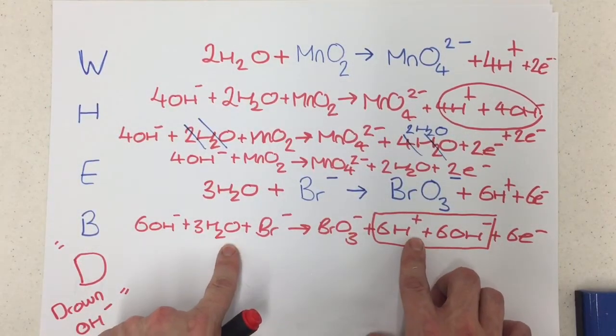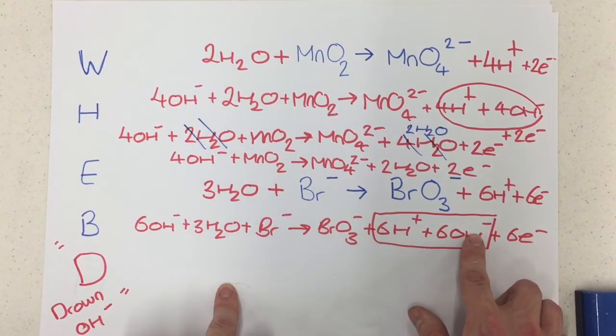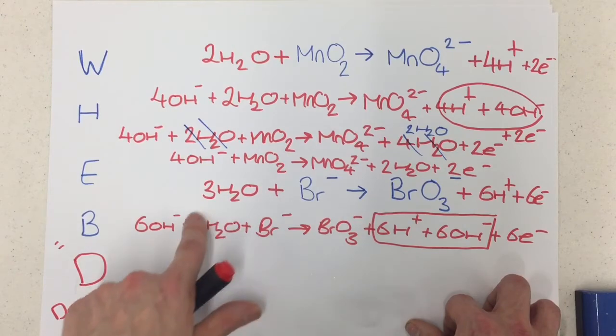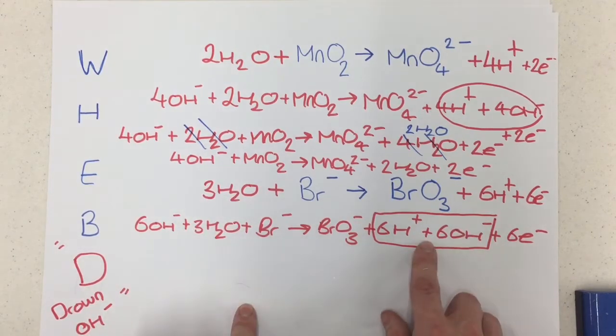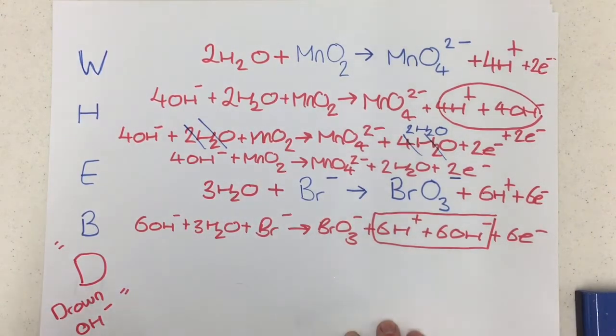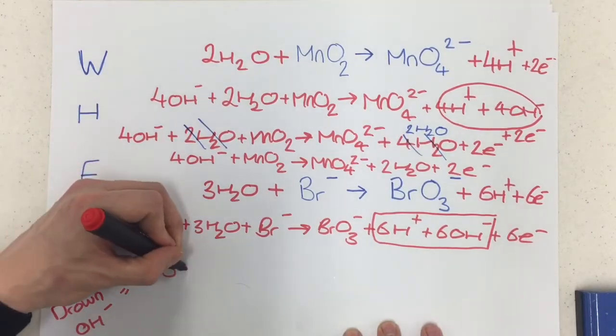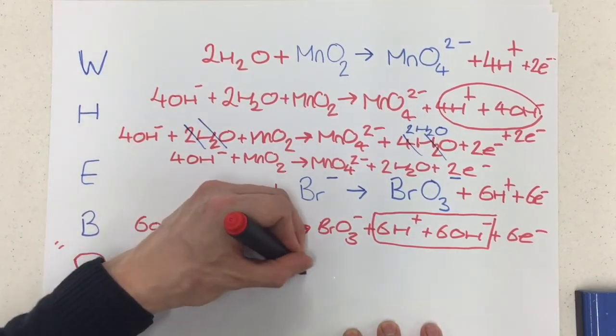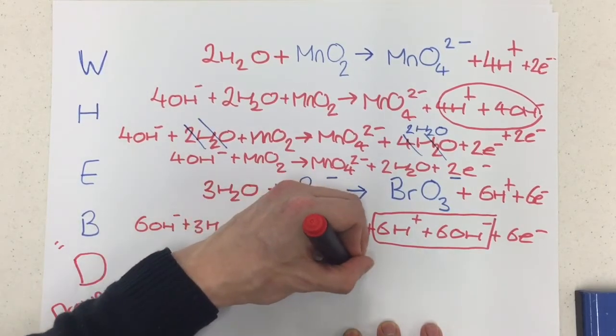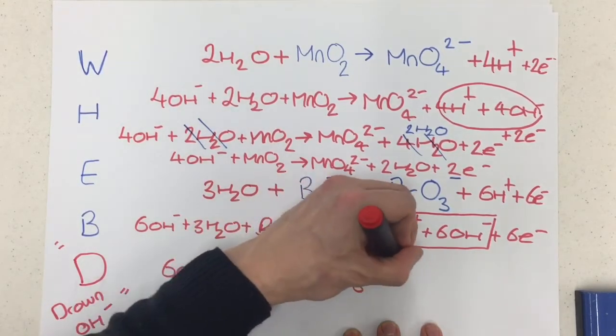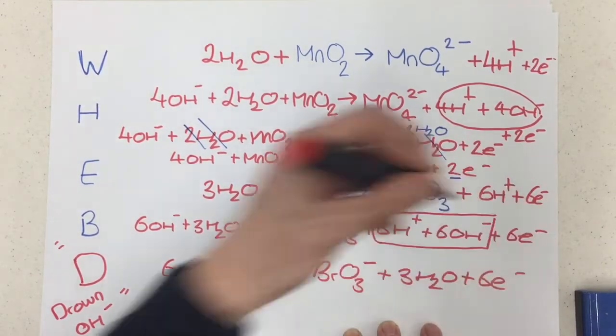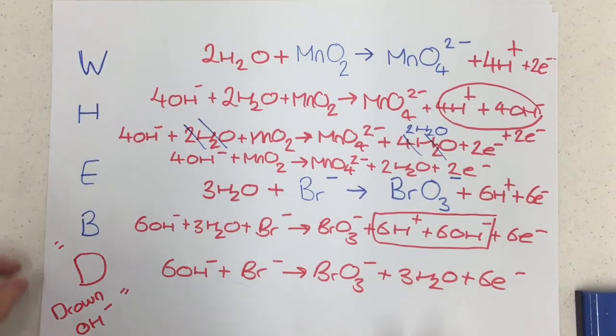But now these here are going to combine together and make waters which will cancel out with these. So I'm going to have 6H2Os here, which will cancel out all of these H2Os, because there's only three of them, and leave me with three on this side. So my equation reads at the end, 6OH- plus Br-, which reacts to form BrO3- plus 3H2O and 6 electrons. And it works! Once again, it's absolutely brilliant.